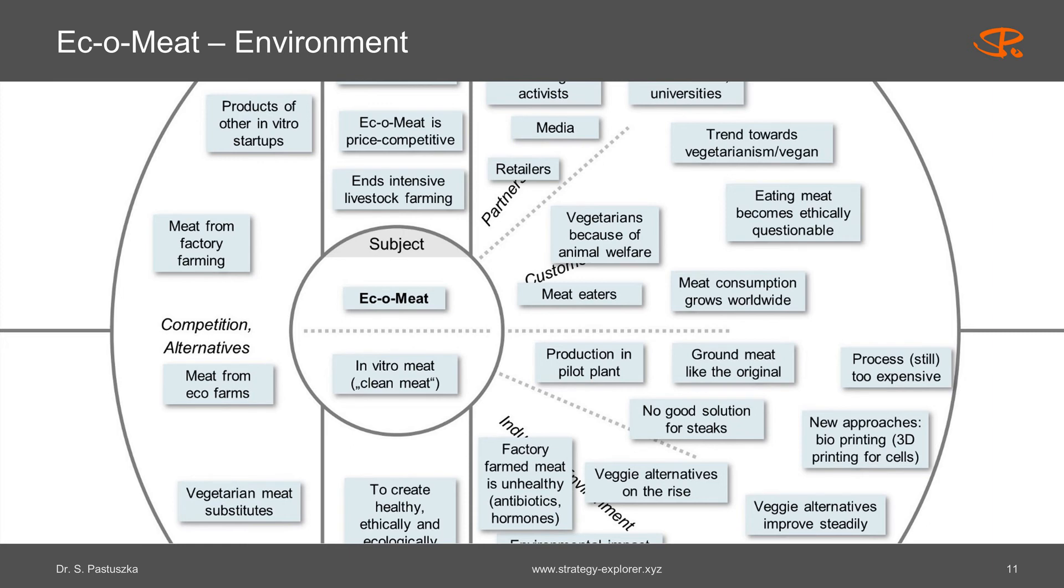At the same time, vegetarianism is on the rise and the vegetarian meat alternatives are getting better and better. This will probably be one of the major risks for EcoMeet. Here you could already see the starting point for the construction of visual logical chains. We will go into more detail in the next episode when we talk about SWOT analysis and how to derive conclusions for potential strategic moves.